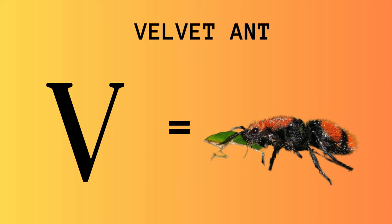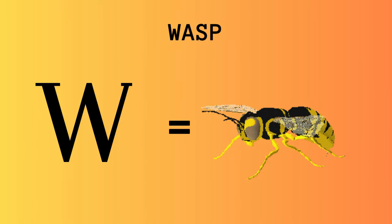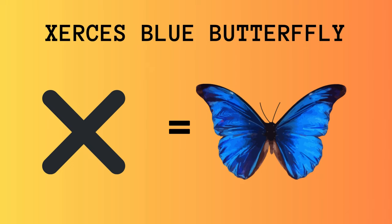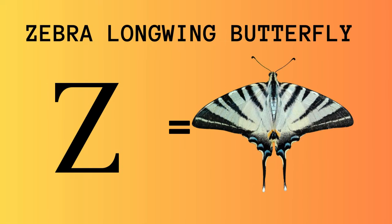V for Velvet Ant. W for Wasp. X for Xerxes Blue Butterfly. Y for Yellow Jacket Wasp. Z for Zebra Longwing Butterfly.